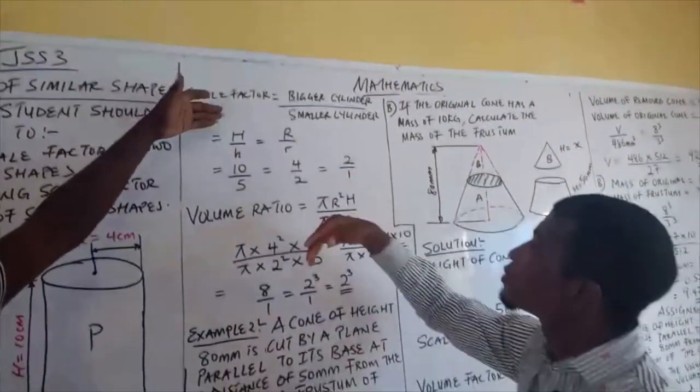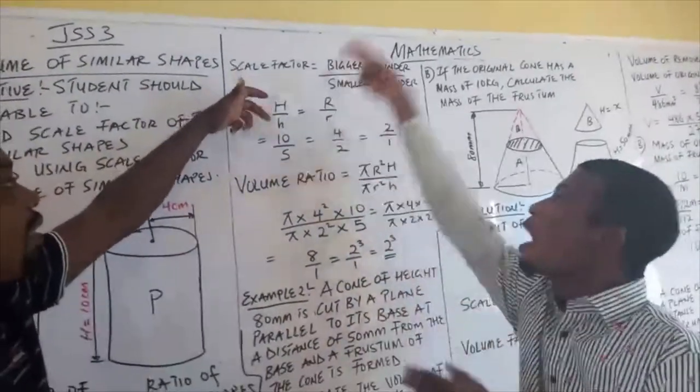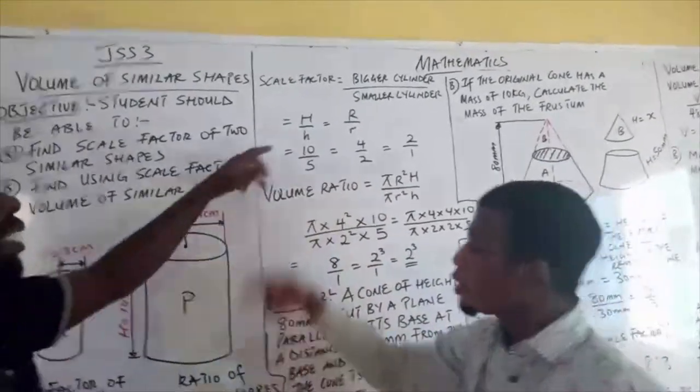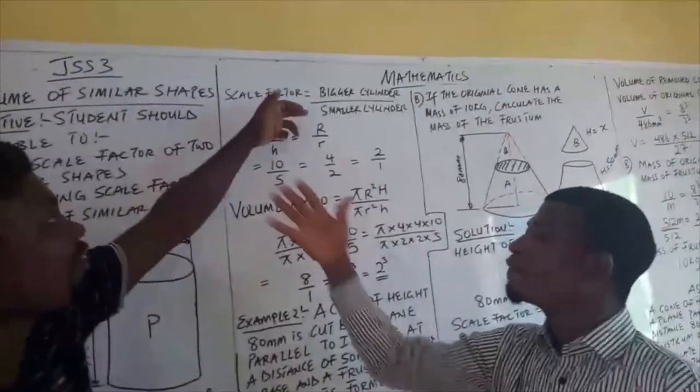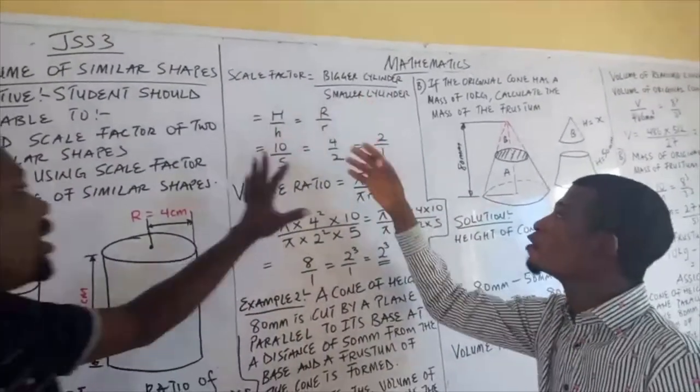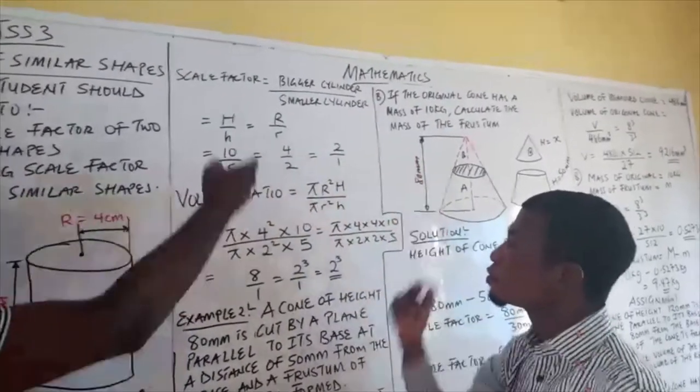Let's move on. You already know what to do - H is the bigger cylinder height and smaller h for the smaller cylinder. So we have H=10 over h=5, and we have R=4 over r=2. The same thing, very easy, reduces to 2 over 1.